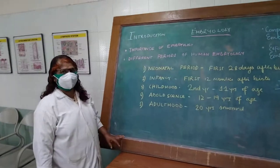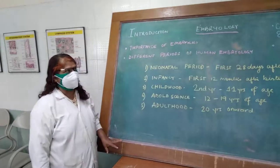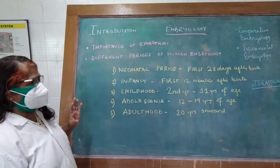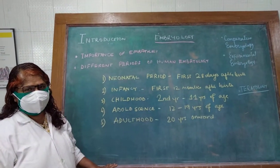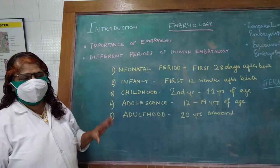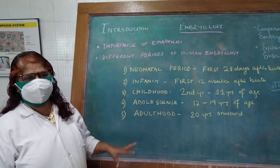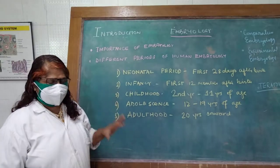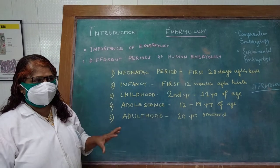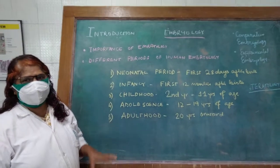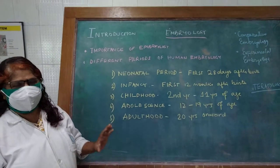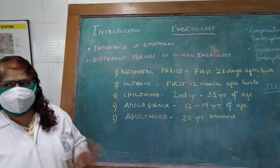Good morning to the students. Let us start with the subject embryology, which is otherwise called developmental anatomy. Embryology is the science which deals with the development of a baby from the stage of fertilization, which takes place in the ampulla of the fallopian tube, until the birth of the baby. It is basically the science which is related with the growth and differentiation of the structures of the human being.